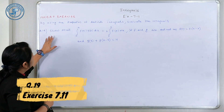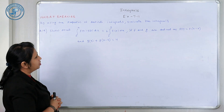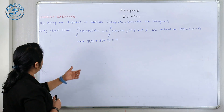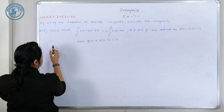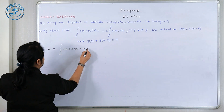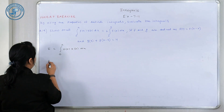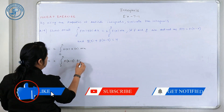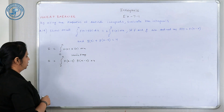Start करते हैं question 19। Show that: 0 to A, F(X)·G(X) DX = 2 × 0 to A, F(X) DX, जहाँ F and G are defined as: F(X) = F(A minus X) and G(X) + G(A minus X) = 4। हम I = 0 to A, F(X)·G(X) DX लेके चलते हैं। 0 to A की property यूज़ करूँ तो: I = 0 to A, F(A minus X)·G(A minus X) DX using property 0 to A, F(X) DX।